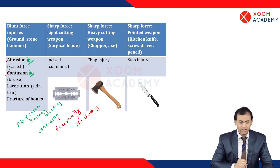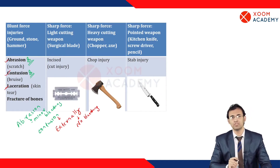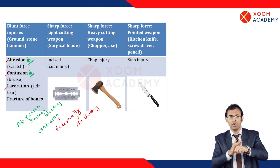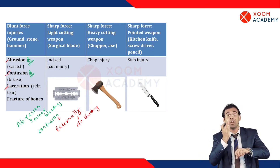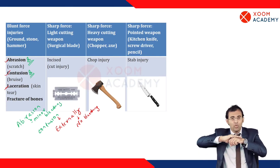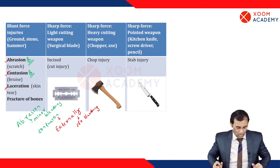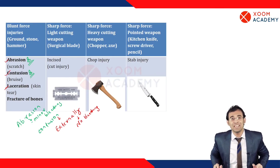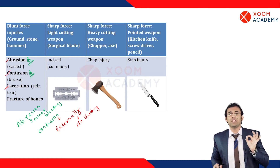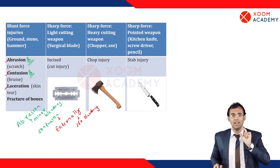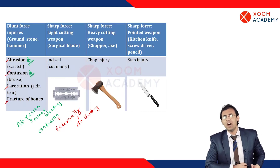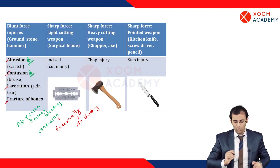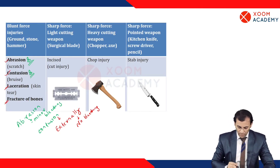Third is laceration. When a heavy force contacts any part of the body — such as in a car accident, bike accident, or hard hit by a rod — there is removal or tearing of skin. This is called laceration, which can involve rupture of skin and subcutaneous tissue. It is also a type of blunt trauma, and a hard hit can also cause fracture of bone. All these are examples of blunt force injury.